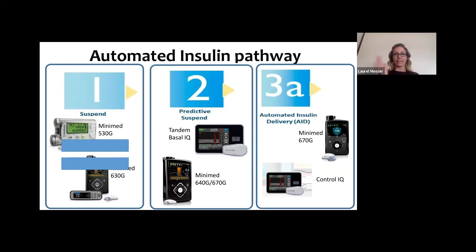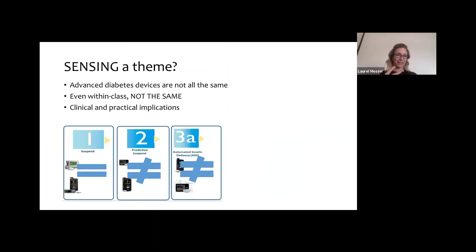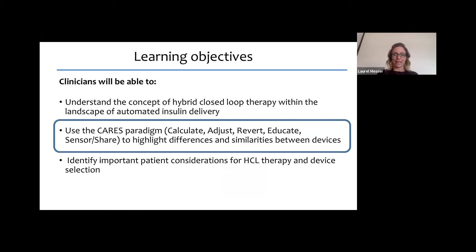What's interesting is the systems that currently suspend insulin do it in the same way, but systems that predictively suspend insulin do it differently — they're actually different from each other and don't have identical algorithms. Likewise, hybrid closed loop systems like the 670G and the future Control IQ will also not automate insulin delivery in the same way. The theme here is that advanced diabetes devices are not the same, and even within the same class of device, they function in different ways, with significant clinical and practical implications.